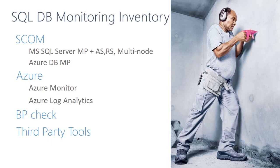Let's recap what we just reviewed. We have three major options from Microsoft to monitor SQL Server and SQL Databases. First is System Center Operations Manager with a set of management packs, including the Microsoft SQL Server management pack supporting monitoring for SQL Server on Linux, Analysis Services, Reporting Services, and multi-node configurations such as mirroring, replication, and Always On Availability Groups.